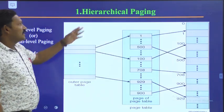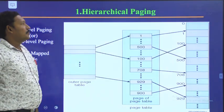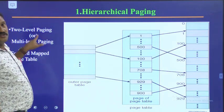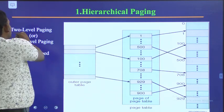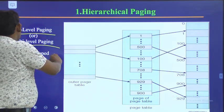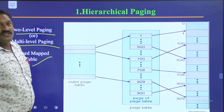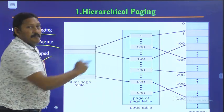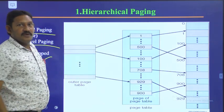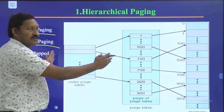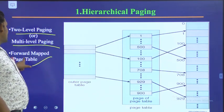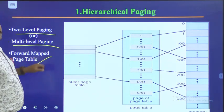First we will go with hierarchical paging. Hierarchical paging can also be called two-level paging, multi-level paging, or forward mapped page table. It is called a forward mapped page table because we are moving in a forward direction from left to right.